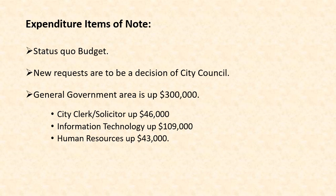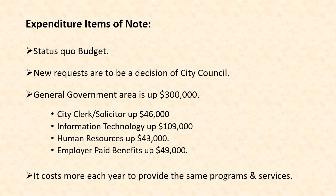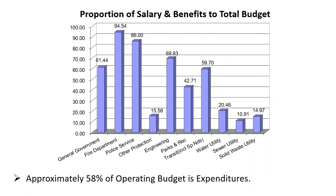Human resources is up about $43,000. The majority of this is actually other departments transferring some of their training dollars to the human resources department, as we've tried to centralize our overall training related to succession planning. Although you're seeing an increase in their budget, you'll see decreases in education in some of the other areas. Employer paid benefits are up about $49,000 — primarily due to the step process for increasing overall contributions for employees and employers, plus some increased pension costs. The bottom line is it costs more each year to provide the same programs and services.